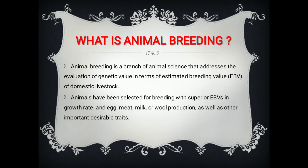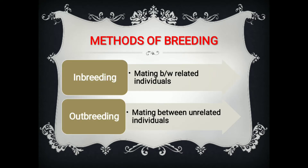What is animal breeding and genetics? Animal breeding is the branch of the animal sciences that addresses the evaluation of the genetic value, in terms of estimated breeding value, of domestic livestock. Animals have been selected for breeding with superior estimated breeding values and growth rate, egg, meat, milk, or wool production, as well as other important desirable traits like color and height.